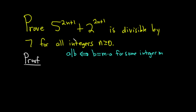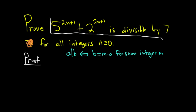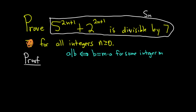Since it's an induction proof, we should identify our statement. Our statement is going to be — I'm going to circle it, putting the 7 over here so it's all on one line. This is our statement, and I'm going to give it a name. This is what we're going to prove: that this statement is true for all integers n greater than or equal to 0.